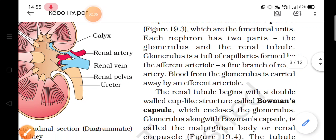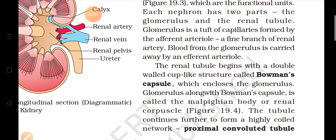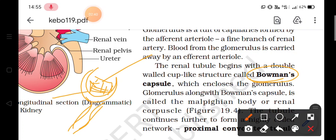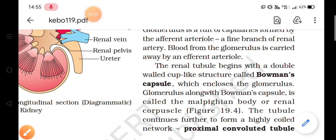The tubule at the lower part of the glomerulus is a tube-like structure beginning with a double-walled cup-like structure called Bowman's capsule. The glomerulus together with Bowman's capsule forms the whole structure called the Malpighian body, or renal corpuscle.